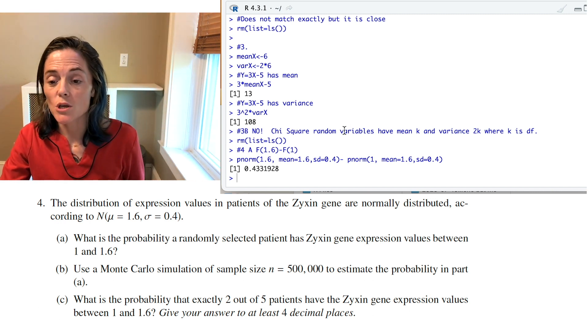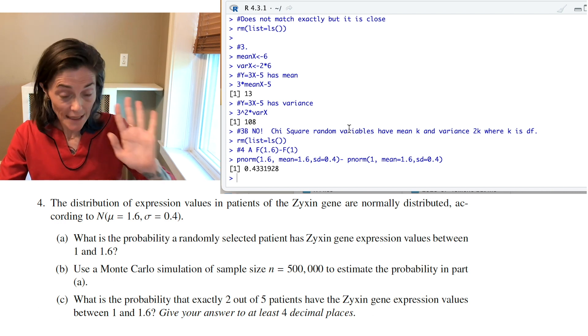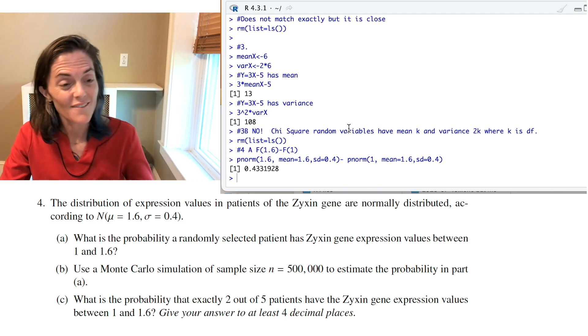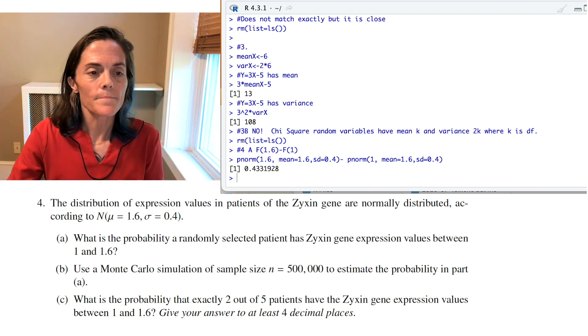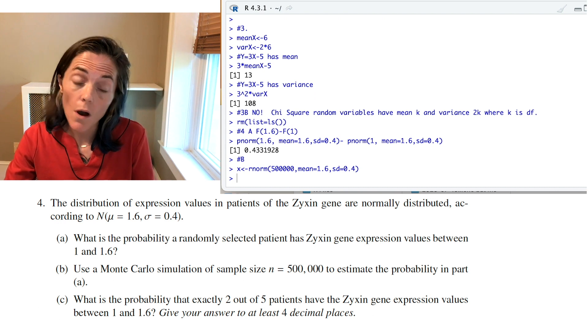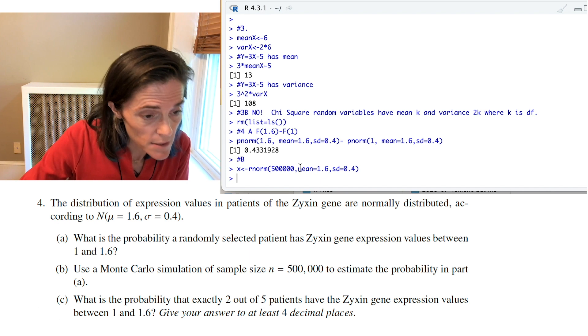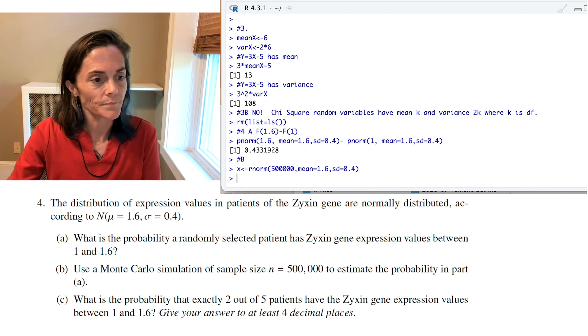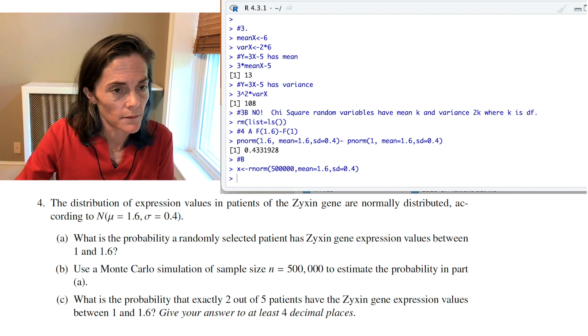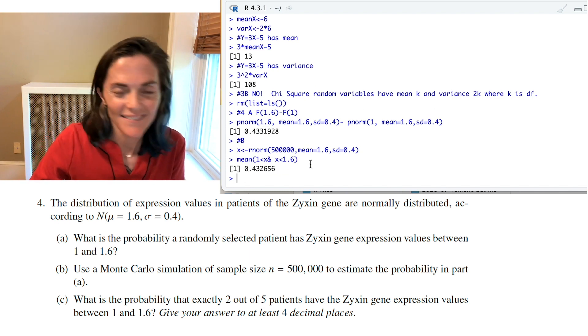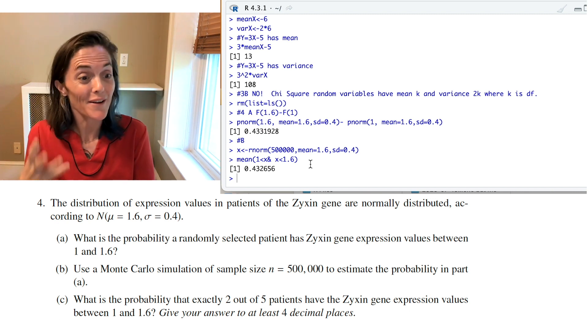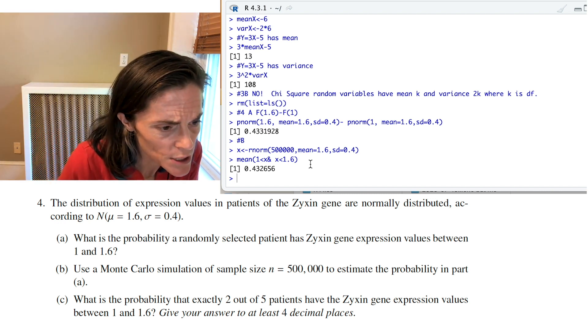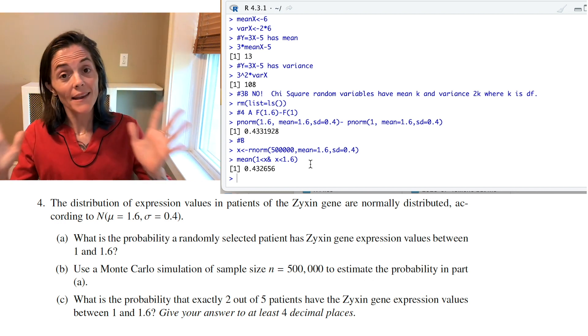Letter B. We want to use a Monte Carlo simulation to estimate exactly this. Sample size 500,000. Compute the probability. Oh, okay. From part A. Very nice. Well, once again, we use the prefix R. So, you notice I have sampled 500,000 from the normal distribution with mean 1.6, standard deviation 0.4. Then, here is my relative frequency that should be close. We have a very large N, should be close to the true probability. This is my estimate here. You notice I get 0.432656. Okay. This is my Monte Carlo estimate.